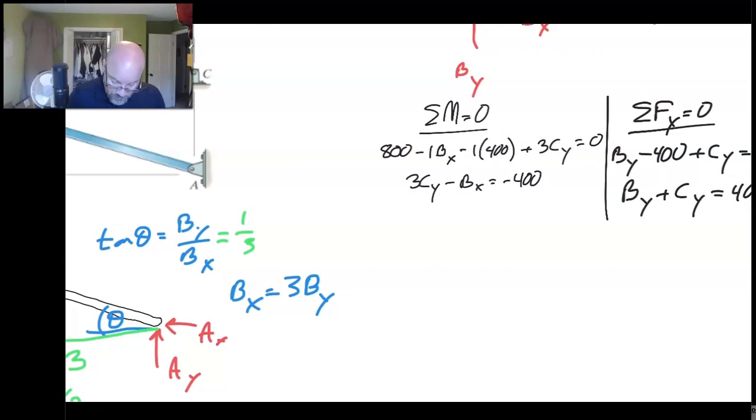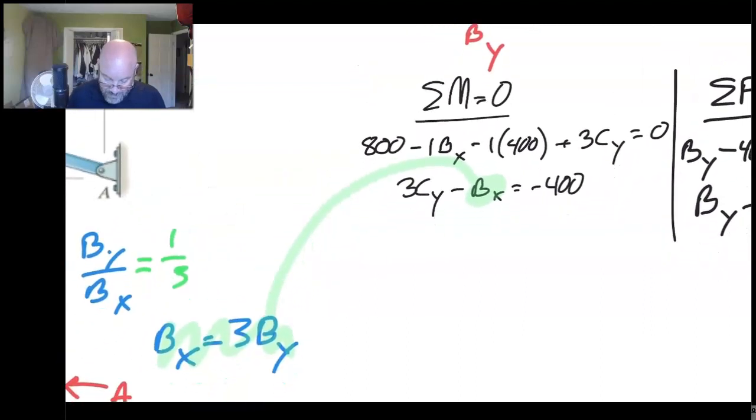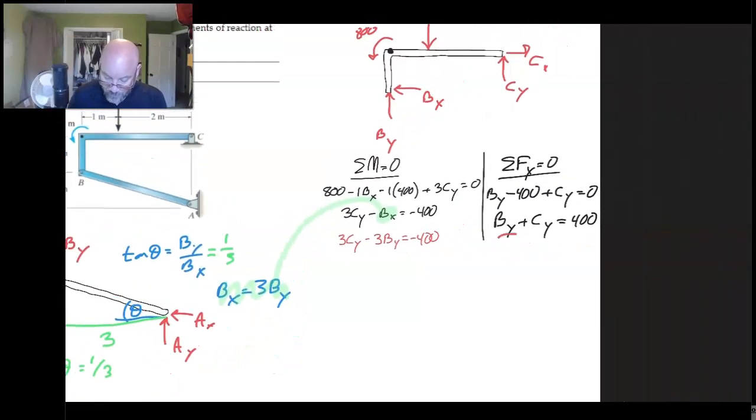Because what we can do is we can take this new relationship, stick it up there like that. So now we're going to rewrite our equation here. We can say 3CY minus 3 BY is minus 400. Nice. BY, BY, CY, CY. Two equations, two unknowns, bada bing, bada boom. And then we can just work that algebra out from there.